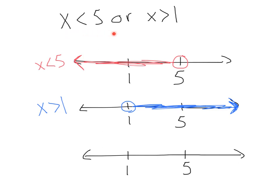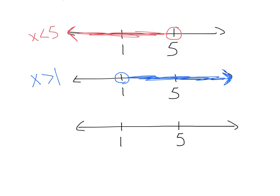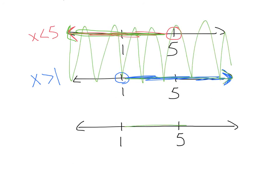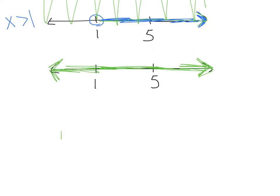Here we have x is less than 5, or x is greater than 1. I've graphed those: x is less than 5, and x is greater than 1. Since it's an or, everything is included. I've got all of this less than 5 and all of this greater than 1, so my final answer actually includes every number in the world — everything less than 5 and everything greater than 1. So we write our answer as all real numbers.